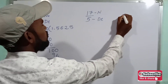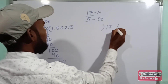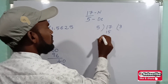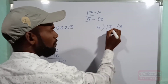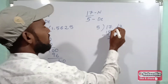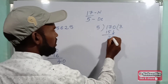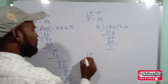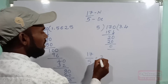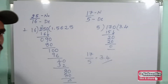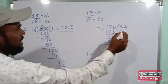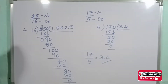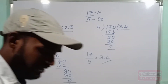For 17 by 5, the numerator is 17 and the denominator is 5. We divide 17 by 5. Now 5 times 3 is 15, and 17 minus 15 is 2. We place a decimal point after the dividend and quotient, then bring down a 0. Now 5 times 4 is 20, and 20 minus 20 is 0. So 17 by 5 equals 3.4. After dividing we get remainder 0, so these are called terminating decimals.